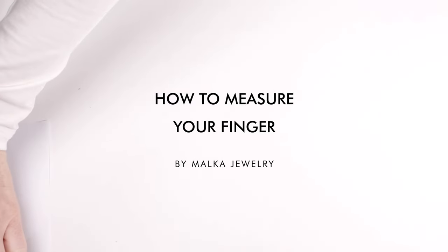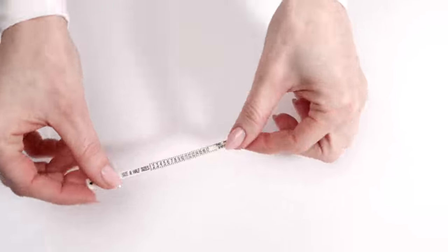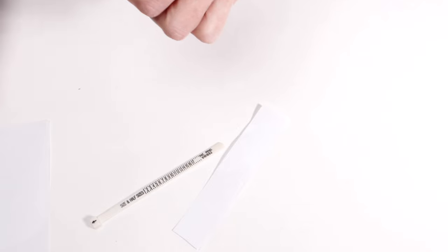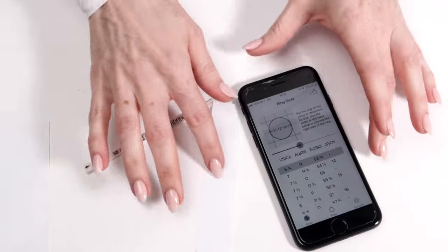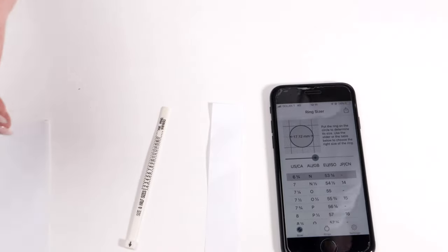I'm going to show you three different methods to measure your finger. The first method is the ring sizer, the second method is using a strip of paper, and the third method would be using the ring sizer app. We're going to cover the three different methods and how you can use all three or whatever suits your needs best.